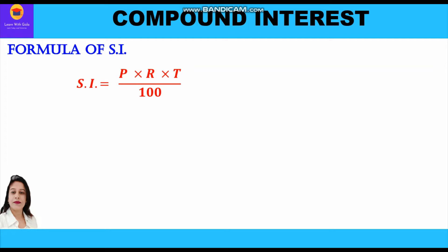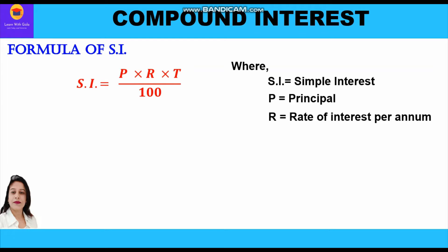The formula for simple interest is SI = P × R × T / 100, where SI stands for simple interest, P is the principal, R is the rate of interest per annum, and T is the time period.